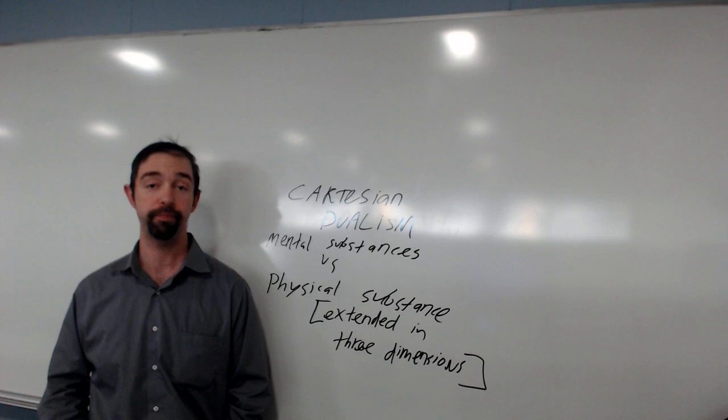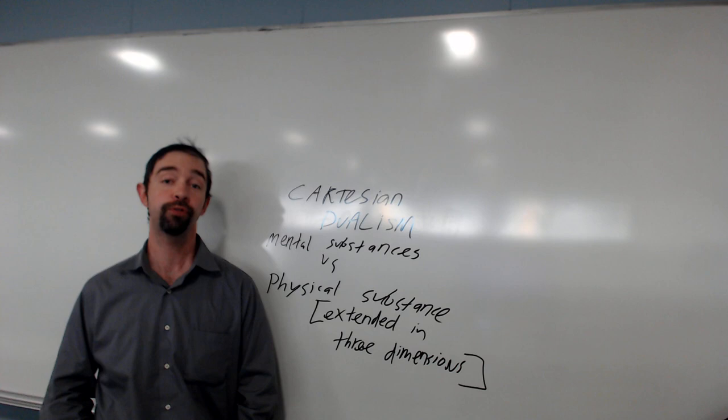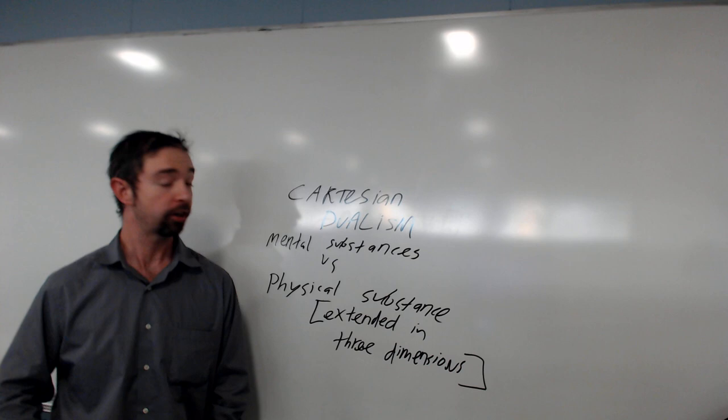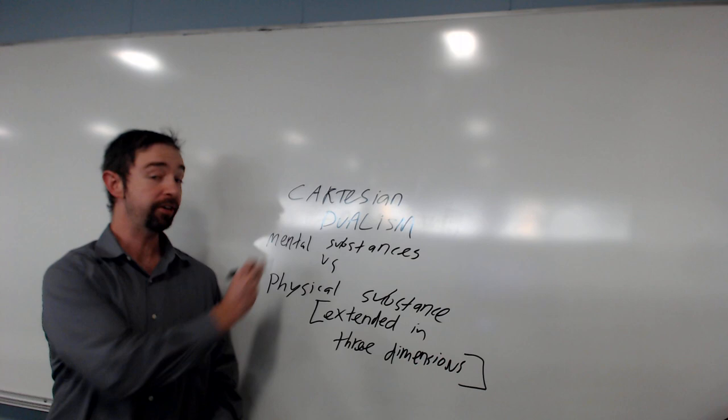Look how different this is from the Aristotelian or Thomist version of matter informism. This is a complete rejection of matter informism. Matter informism says that substances, like you, like a tree, like Mr. Whiskers, my cat, substances are matter that's formed a certain way. Cartesian dualism says there's actually two totally different kinds of substances.